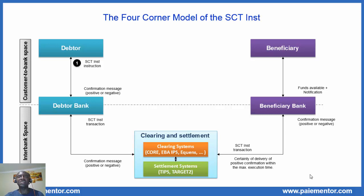The first step is the sending of the SEPA instant instruction to the originator bank by his customer, the originator. The originator can use different channels like a smartphone or an e-banking portal for that purpose. He must provide beneficiary information, amount, and other information so that the order can be processed by the bank.